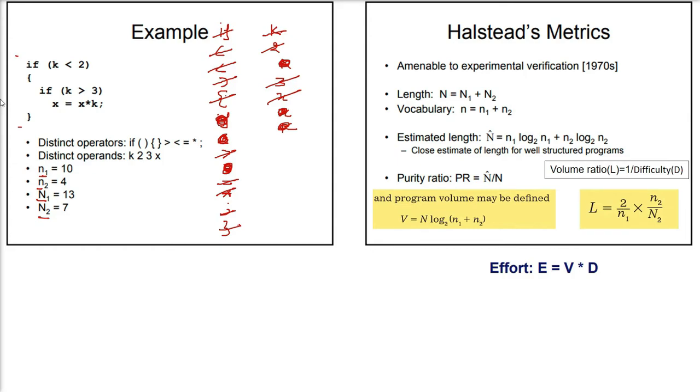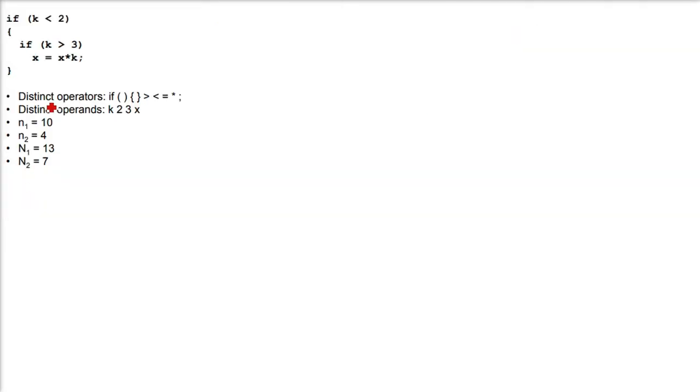Calculation I have already done. First thing we will find is the length. Length is capital N, equal to capital N1 plus capital N2. The values are 13 and 7, so N1 plus N2 is 13 plus 7, which equals 20.